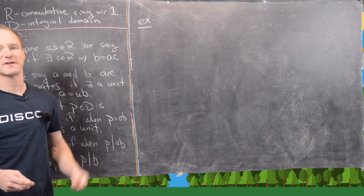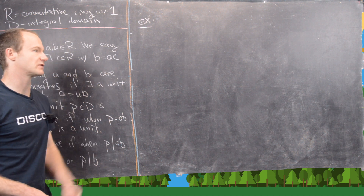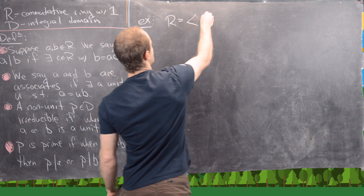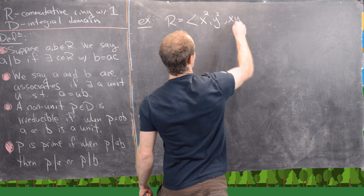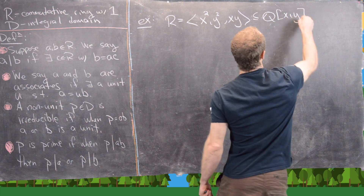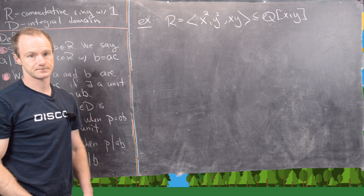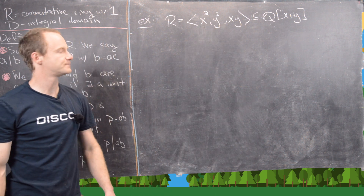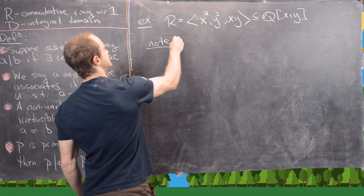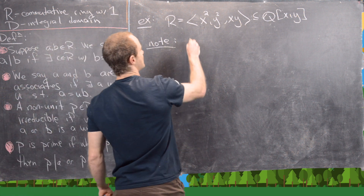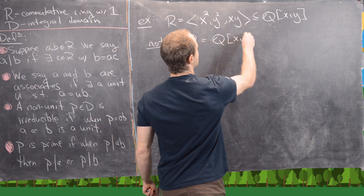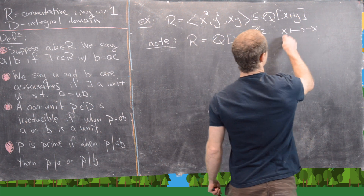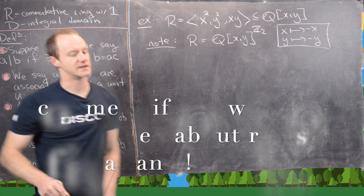Let's look at a couple of examples. The first is related to polynomials. Consider the subring R generated by x², y², and xy — a subring of the polynomial ring Q[x, y]. Everything inside R looks like a polynomial in x², y², and xy. In fact, R is the polynomial ring of invariants of Q[x,y] under the group action Z₂, where Z₂ takes x to −x and y to −y.